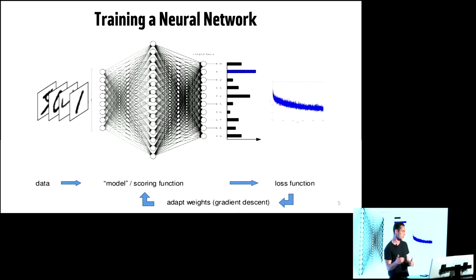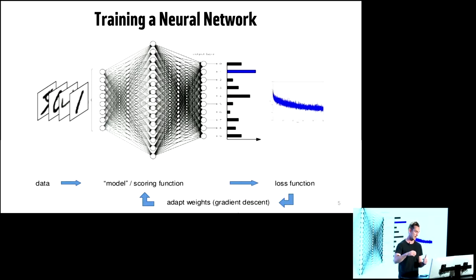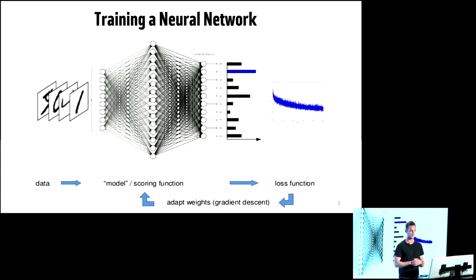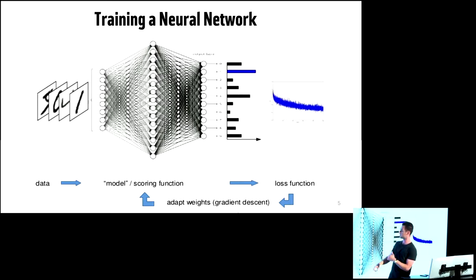This is an iterative process where we throw in our data, iterate over all of it, output what we think our class is, log our loss function, and then go back and update the weights within the model. We update using gradient descent or backpropagation, iterating and logging the loss. Hopefully we get a loss function that goes down and converges.